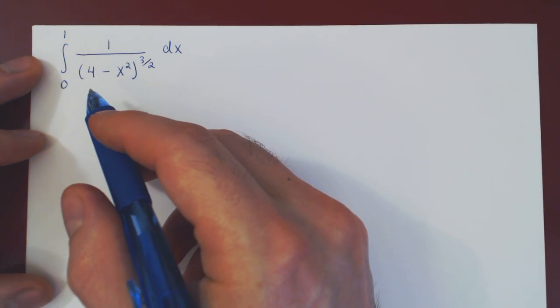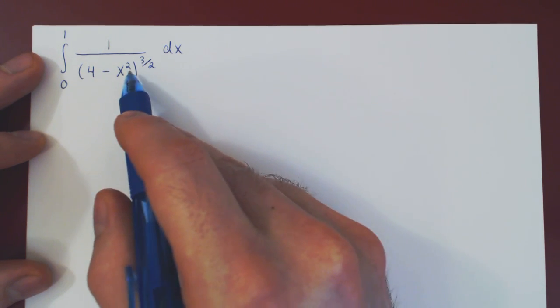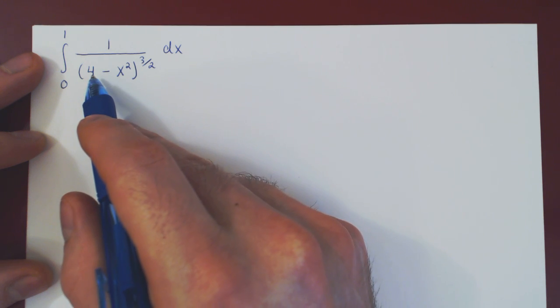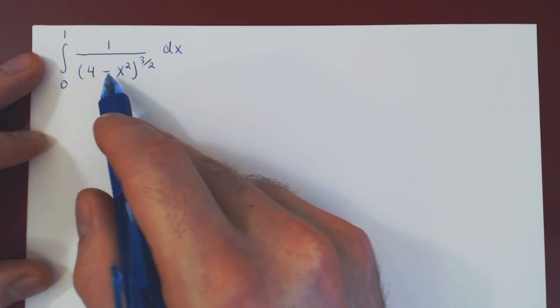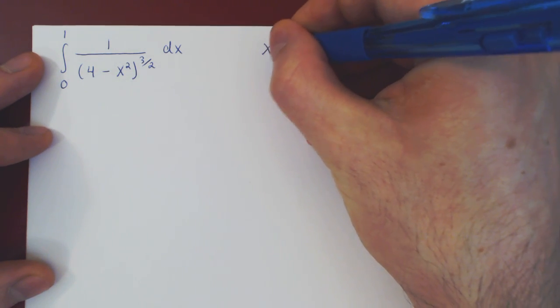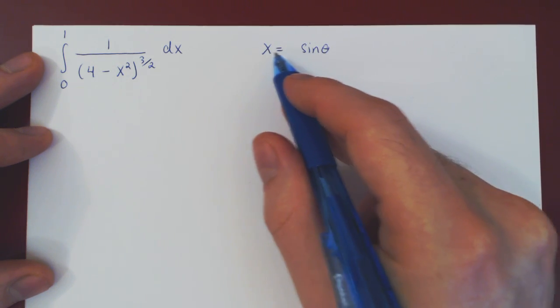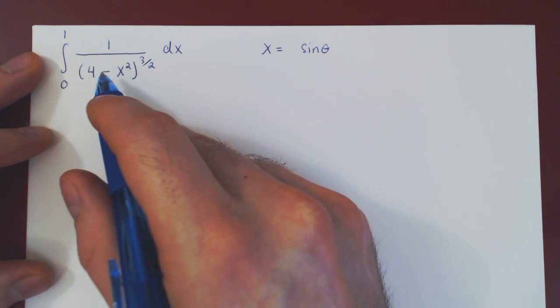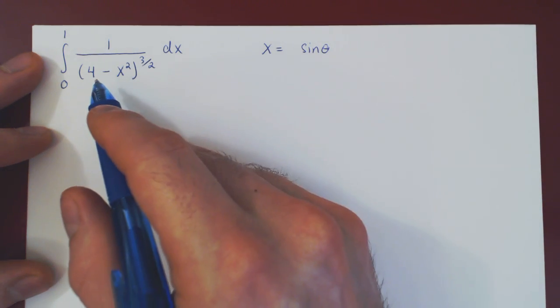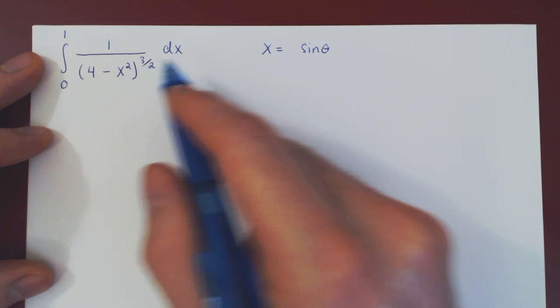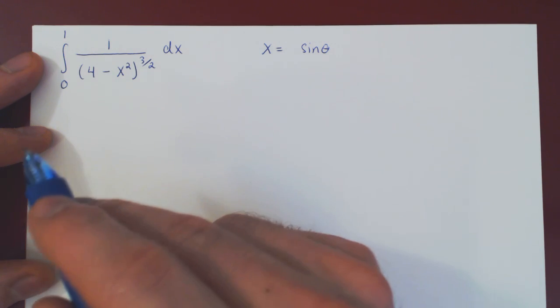So here the question is, well, what is our choice of trigonometric substitution? Well, we have 4 minus x squared here. It's almost 1 minus x squared, and of course if this was 1 minus x squared, we would simply let x be sine of theta. But if that's our choice, then we'll have 4 minus sine squared, and then we're kind of stuck because we need this to be 1 minus sine squared, which will then become a cos squared, which will cancel the square root.